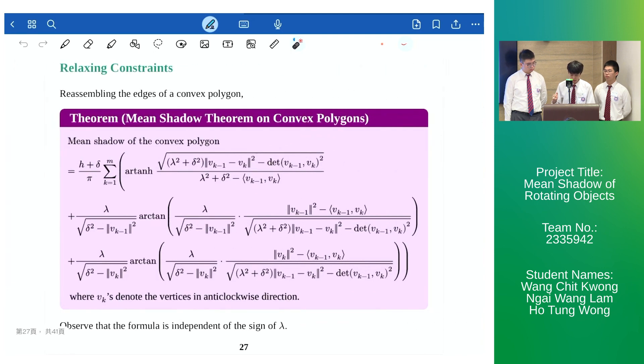Once again by reassembling the edges into a convex polygon we arrive at the following theorem which gives the mean shadow of the convex polygon as a formula which is solely determined by the relative position of the vertices to the rotation center as well as the position of the light source. Besides it's worth noting that the result is independent on the sign of lambda.